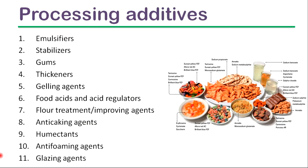The second food additive type is processing additives. These are used to achieve the required qualities of foods during food processing. Emulsifiers, stabilizers, gums, thickeners, gelling agents, food acids and acid regulators, anti-caking agents, humectants, anti-foaming agents, and glazing agents can be categorized under this type.